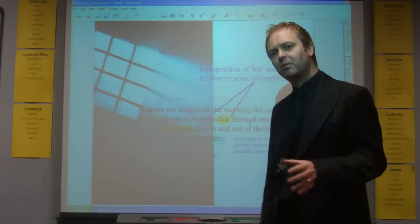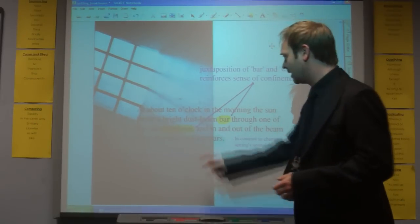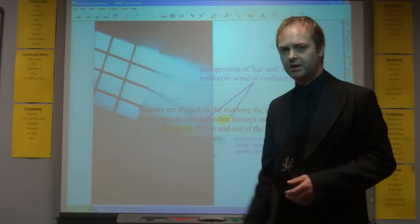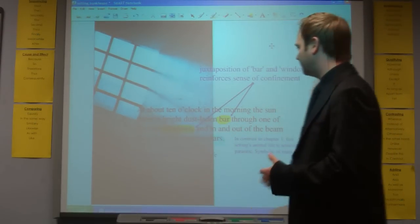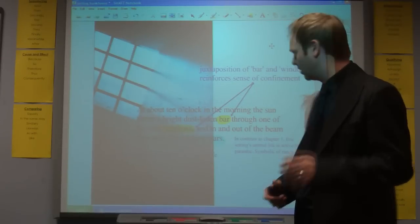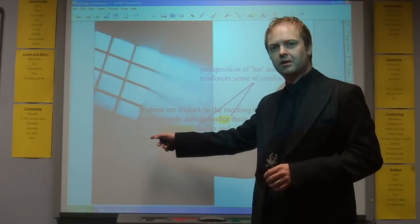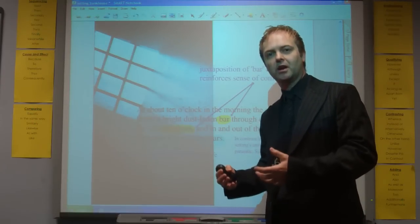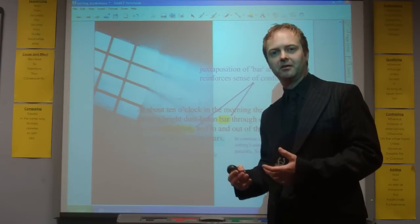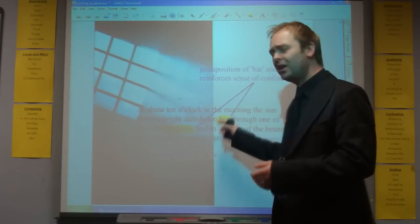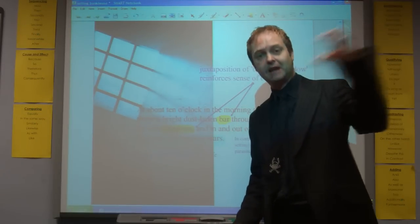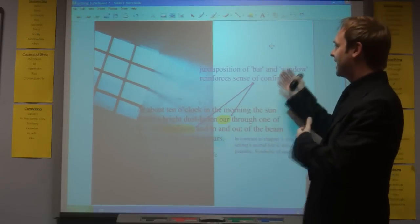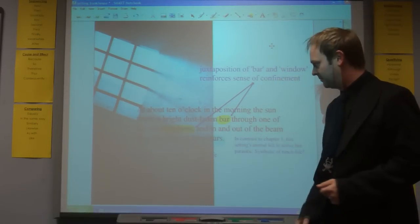One of the most important parts of this description of setting: At about ten o'clock in the morning, the sun threw a bright dust laden bar through one of the side windows. I don't think you can juxtapose those two words, bar and windows, without getting a sense of imprisonment. You only normally think of barred windows within the context of a prison. And while it's actually describing the light coming through the window, a shaft of light, a bar of light, I think it's very difficult to avoid those connotations of confinement and imprisonment.